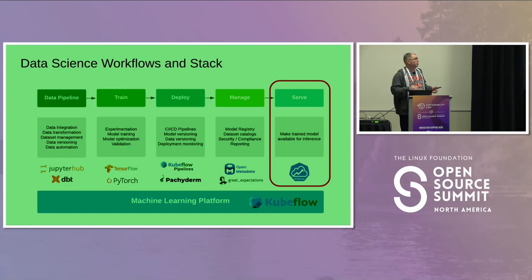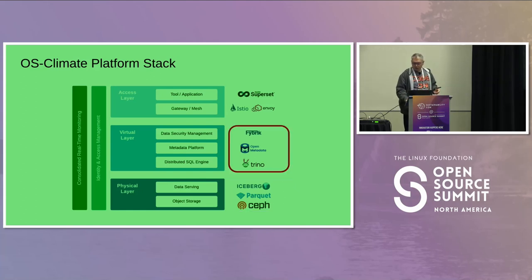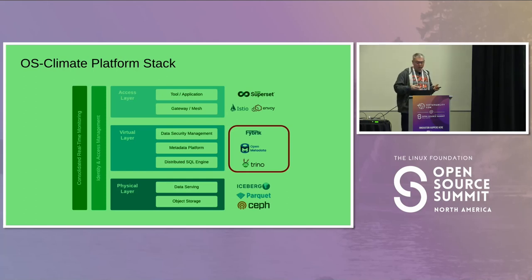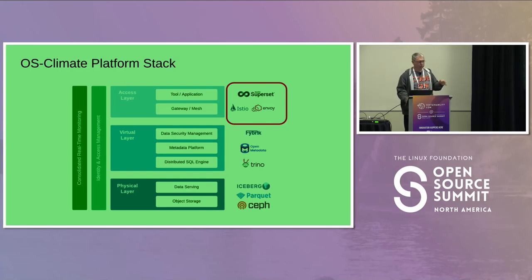Another way to slice this is by layers of providing data. At the very bottom, we're doing a lot with Iceberg and Parquet, living on things like Ceph. At the federation layer, we're using Open Metadata and federating a lot using Trino. At the highest level — the application layer — we're doing a lot with standard Kubernetes deployment tools, Istio, Envoy, and business intelligence tooling like Superset.